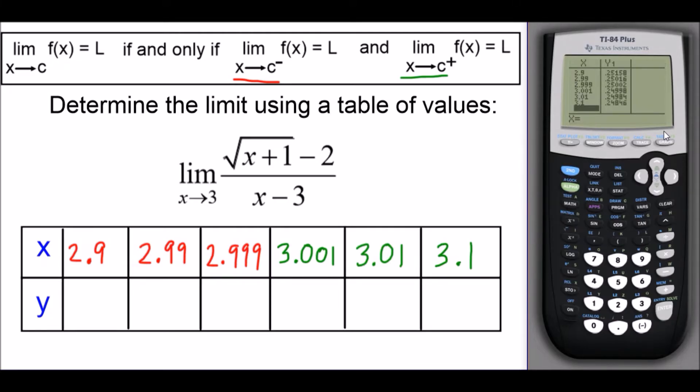So once you have these values here, I'm going to write them over and round four places out. For 2.9, if we round it to four decimal places, we'll have 0.2516. Remember, the 8 is going to round this 5 next to it up to a 6.